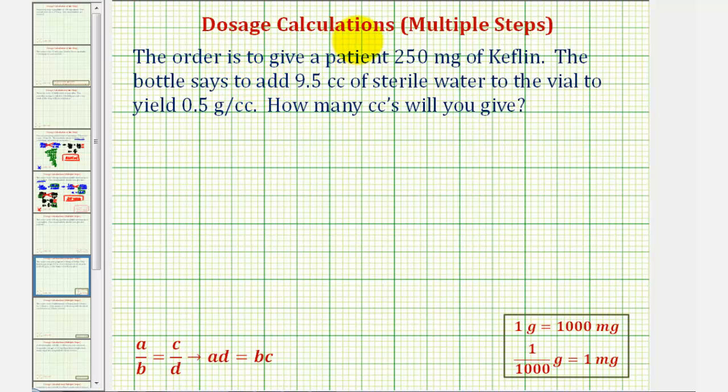Welcome to an example of a dosage calculation that requires multiple steps. The order is to give a patient 250 milligrams of Keflin. The bottle says to add 9.5 cc's of sterile water to the vial to yield 0.5 grams per cc. How many cc's will you give?